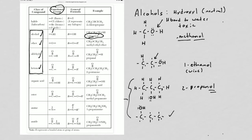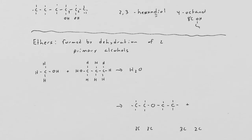The next thing I'm going to do are ethers. Ethers are basically two chains of carbon connected by an oxygen in the middle. They are formed by the dehydration of what are called primary alcohols. Primary alcohols are ones in which the hydroxyl is on the number one carbon. So number one is like prime.